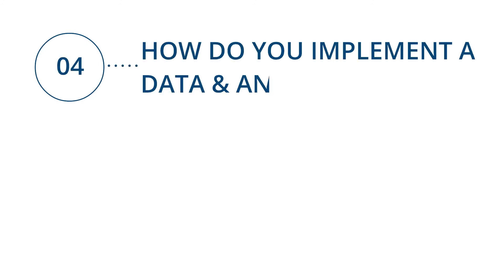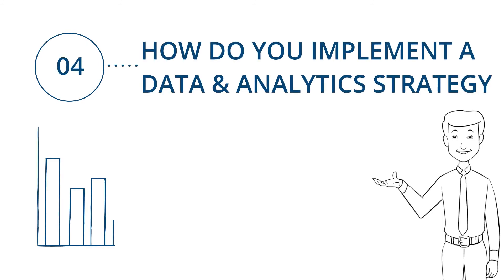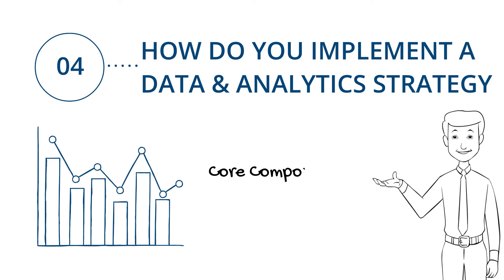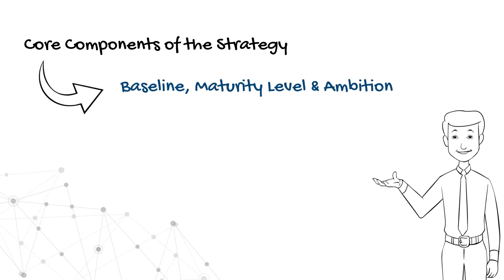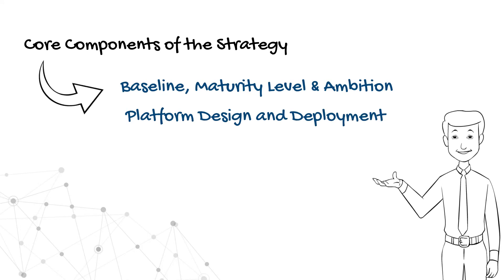So how do you implement a data and analytics strategy? You must understand that there are some very core components to it. Understanding what your baseline and current maturity level is and what your ambition needs to be. What is the platform of choice for you — which hyperscale provider: Google, Amazon, or Microsoft Azure would you like to use? Where is your people capability, both in terms of your data and analytics teams and also your business users that are making data-driven decisions once you have all the elements in place?